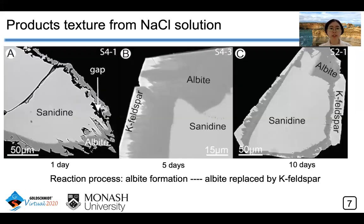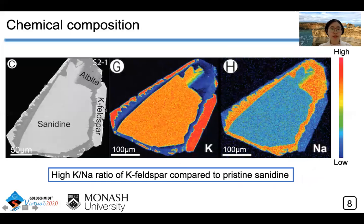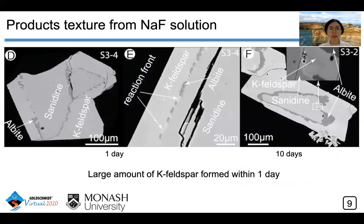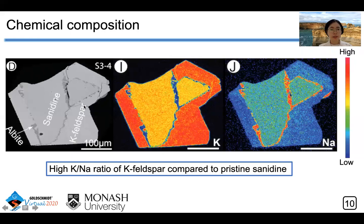In sodium-chloride solution, albite starts to replace sanidine first, but then a new K-feldspar phase starts to replace albite and can form a rim around albite. This new K-feldspar phase is characterized by higher potassium and lower sodium contents. In sodium-fluoride solution, a large amount of K-feldspar phase formed within only one day, and the reaction product is characterized by a sanidine–albite–K-feldspar zonation texture. Again, this new K-feldspar phase is characterized by higher potassium and lower sodium contents.